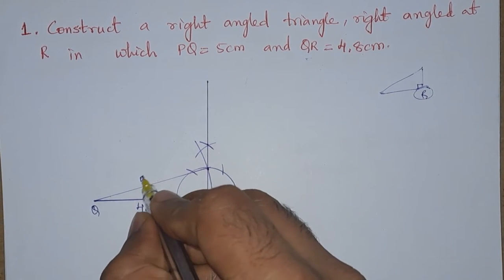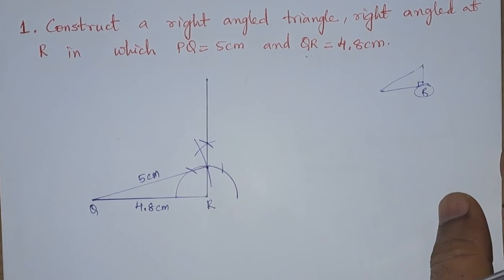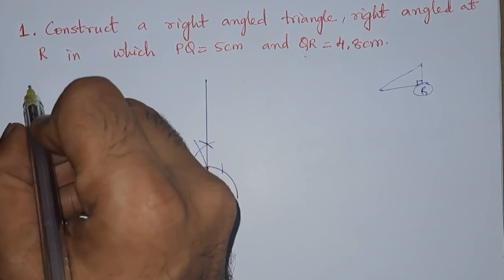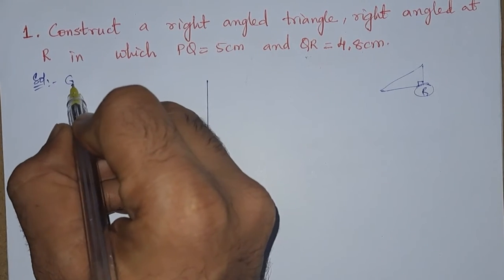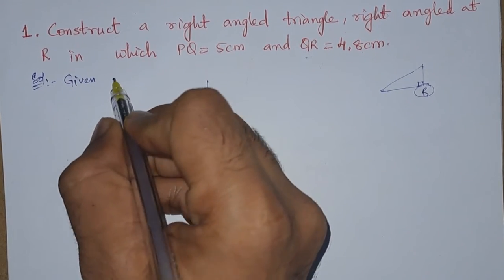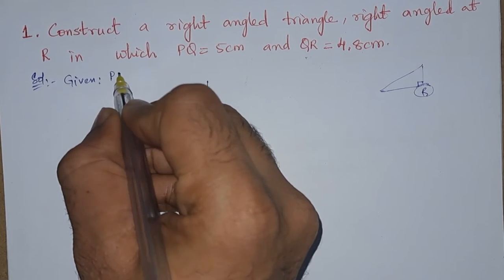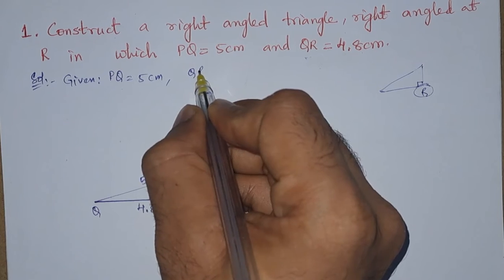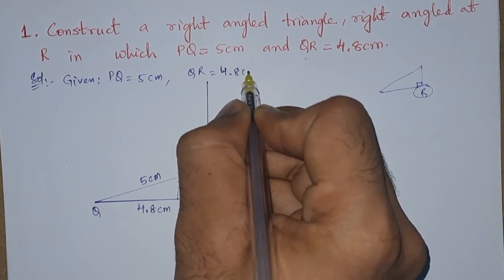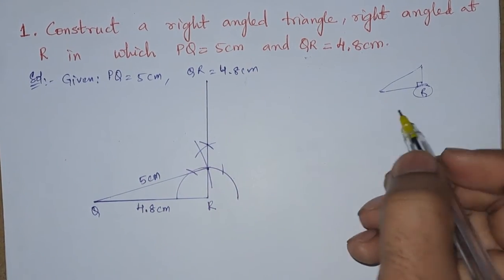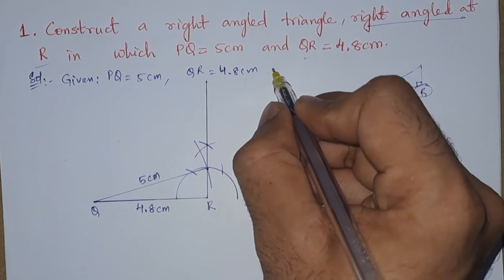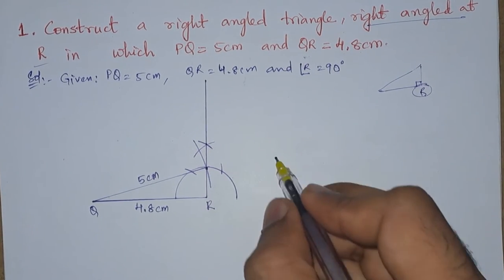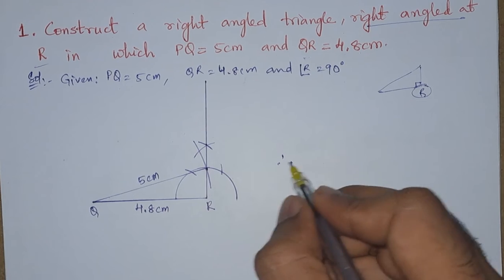This is 5 centimeter. First we write down the given information: PQ is equals to 5 centimeter, QR is equals to 4.8 centimeter, and angle R is equals to 90 degrees. That is the given information.